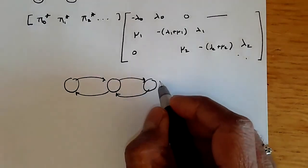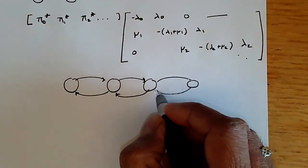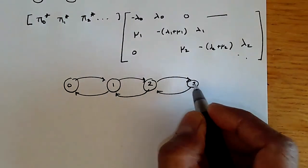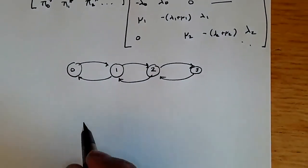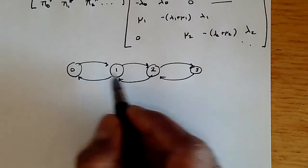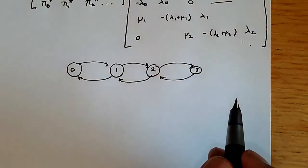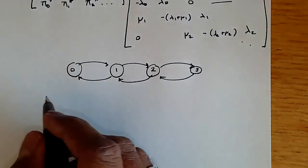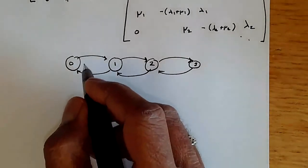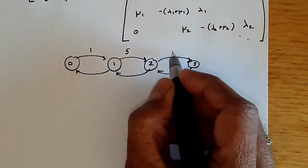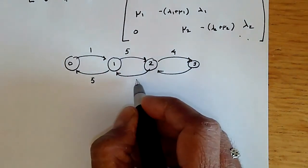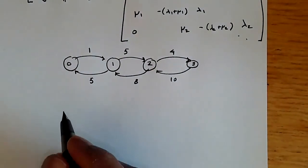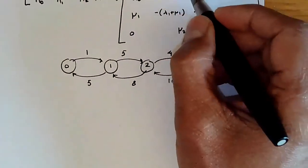Let's do a simple example. Consider a four-state birth-death process with states 0, 1, 2, 3 — corresponding to a population that can range from size 0 to size 3, where no more births occur above 3 and no more deaths occur at 0. We assign rates: λ_0 = 1, λ_1 = 5, λ_2 = 4, and μ_1 = 5, μ_2 = 8, μ_3 = 10.